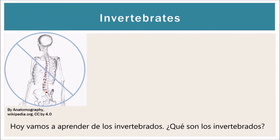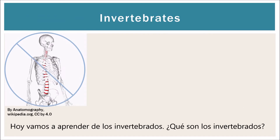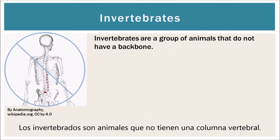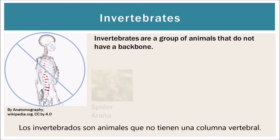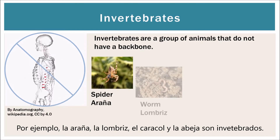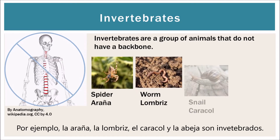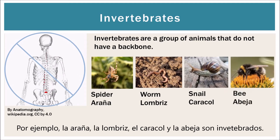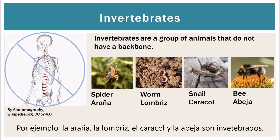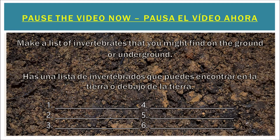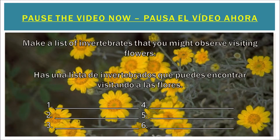Today we're going to learn about invertebrates. What are invertebrates? Invertebrates are animals that don't have a backbone or a spinal cord. For example, a spider, a worm, a snail, and a bee are all invertebrates. Let's do an activity. Pause the video now and make a list of invertebrates that you might find on the ground or underground. Now pause the video again and make another list of invertebrates that you might find visiting flowers.